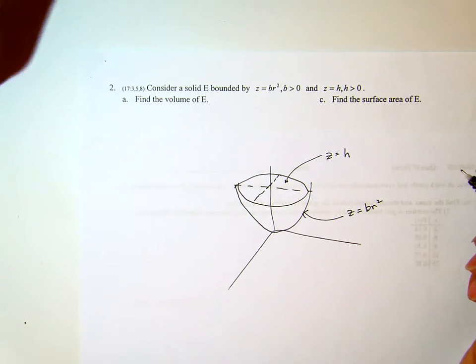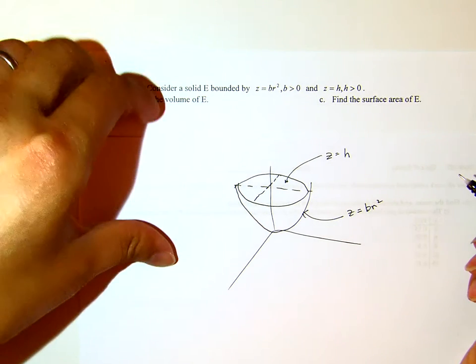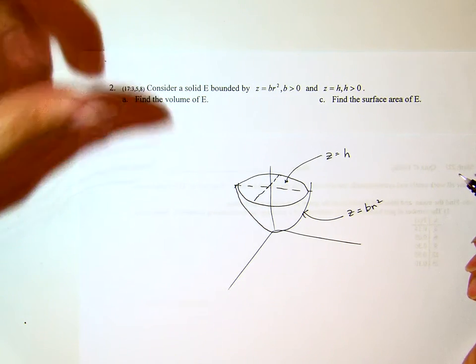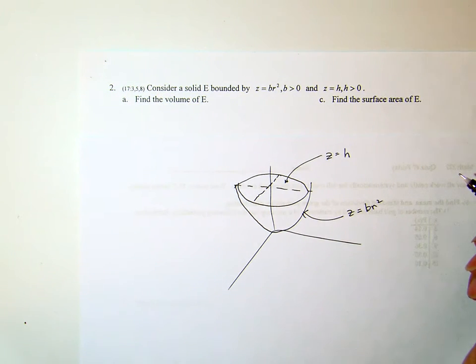Now, the thing is, we don't have exact numbers for H and B. They are just parameters here. So you see that this solid is bounded above by H, and bounded below by Br squared.